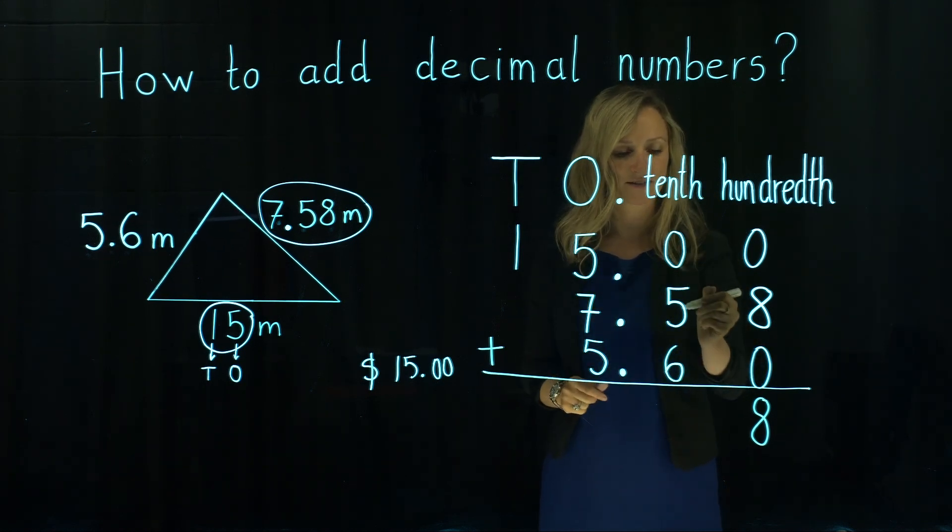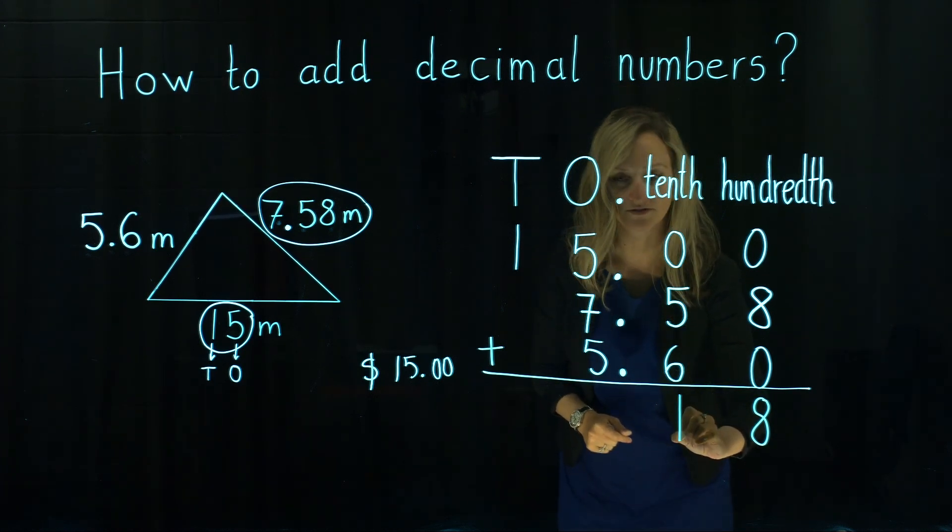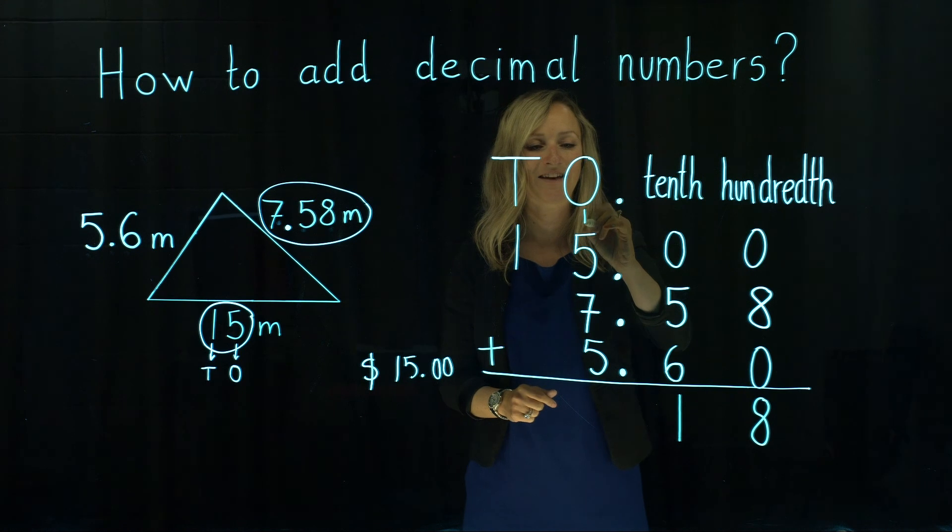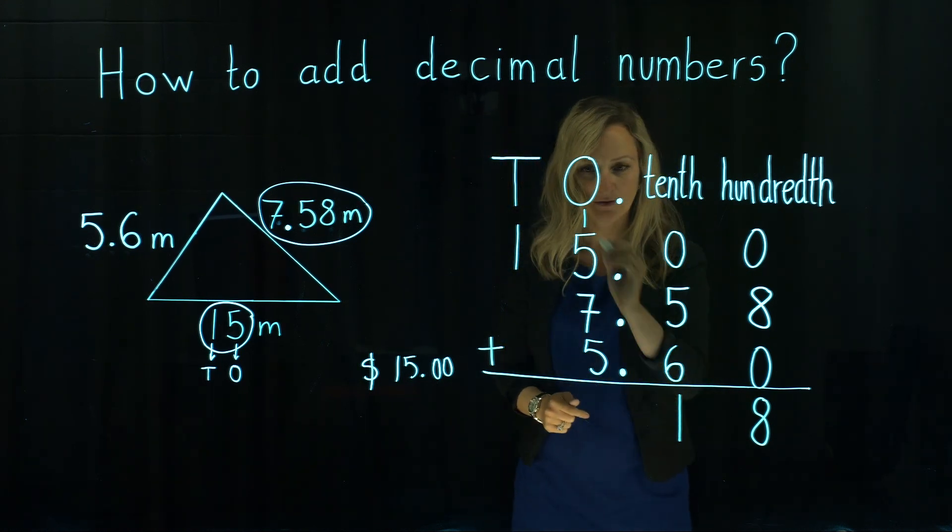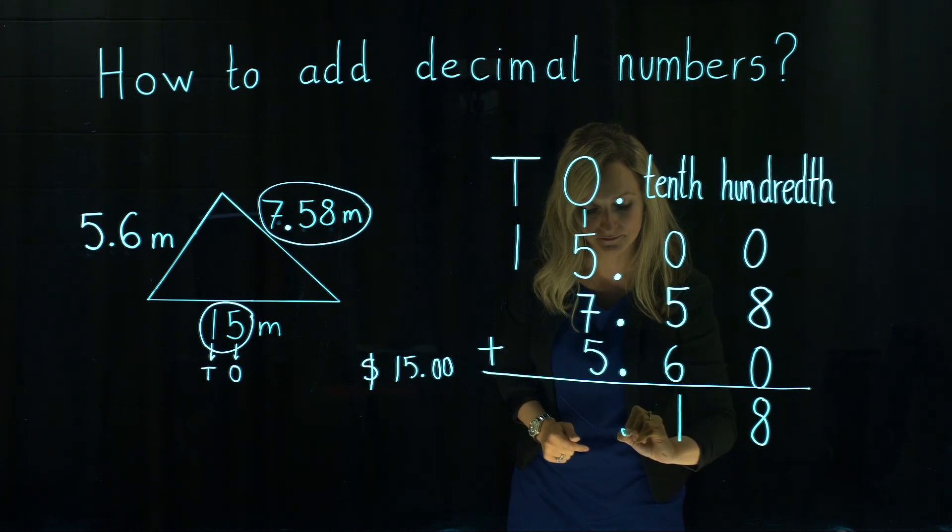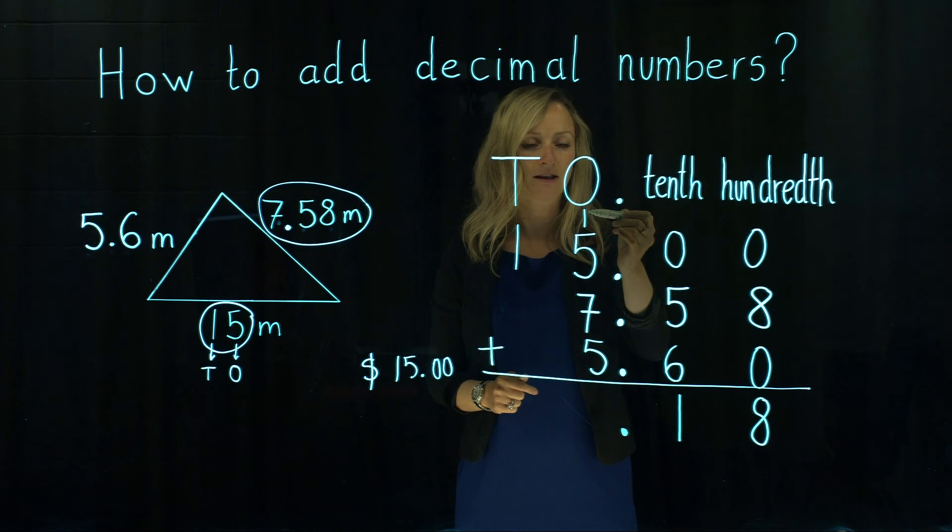0 plus 5 is 5 plus 6 is 11. 1 goes here and 11 is made out of 1 ten and 1 one, and we carry over 1 to a next place value. Then we continue.